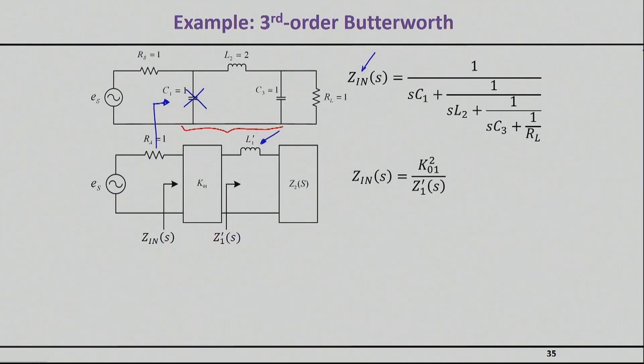That means that I have to basically replace this capacitor with a series element. This guy will become a series element, but of course I have to invert impedance so it needs to include the inverter as well. In order for this circuit to be equivalent, that input impedance right here which we calculated at this point must be equal to the one from the original circuit.